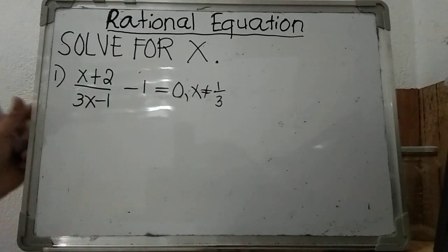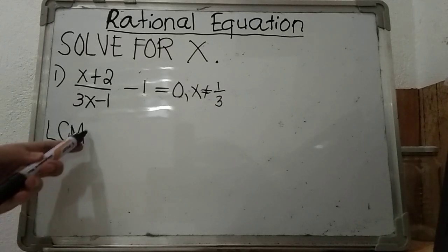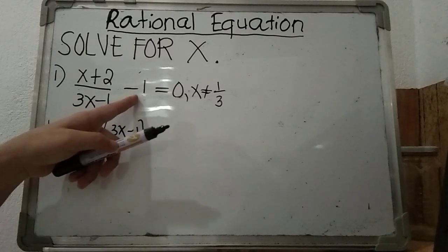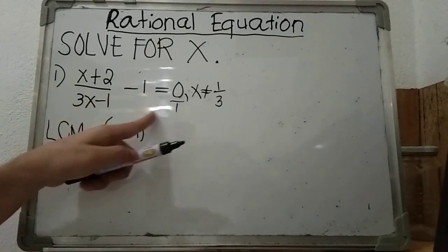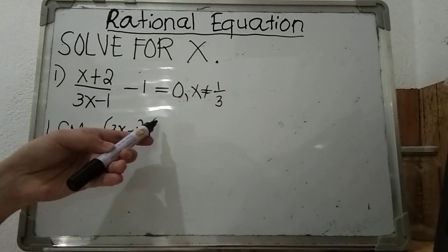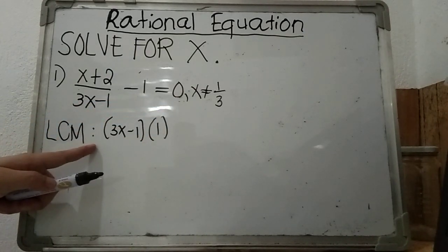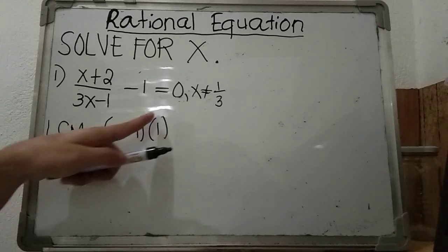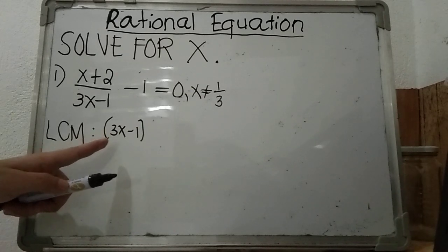First, we find our LCM and then multiply it to the whole equation. Our denominators are 3x minus 1, and then there is an understood denominator of 1 for each of the other terms. We pick all the denominators: 3x minus 1, and 1, and 1. Take note that LCM must use unique expressions — expressions must not be repeating. Since 1 times 3x minus 1 is 3x minus 1, we have only one expression for our LCM: 3x minus 1.